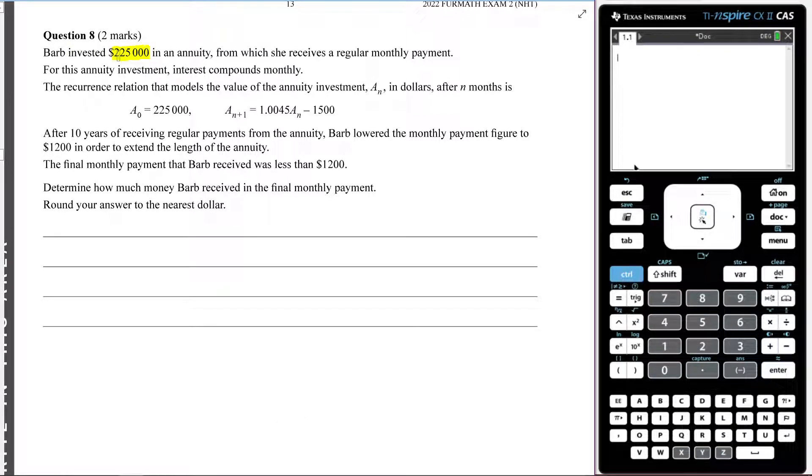It says Barb invested $225,000 in an annuity from which she receives a regular monthly payment. Really think about how an annuity works here for a moment. Annuity works like in Australia, how super works. So you might end your working career with $225,000 in your super account, and that's what you're going to retire off.